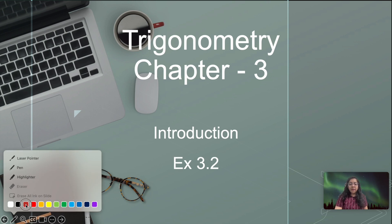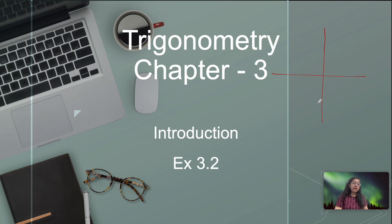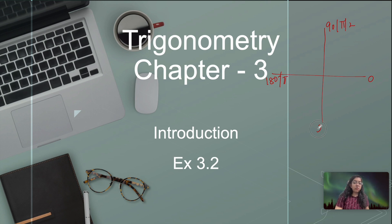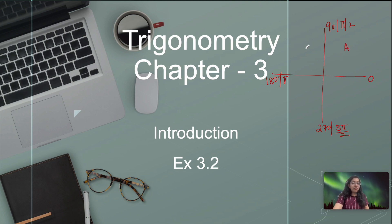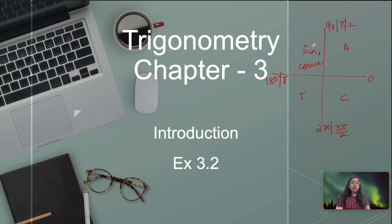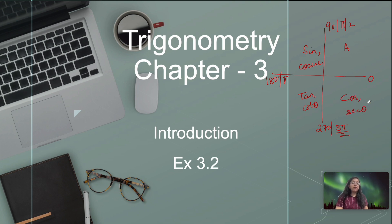First of all, if I have a right angle triangle: I have 0° here, 90° (or π/2) here, 180° (or π) here, and 270° (or 3π/2) here. Always remember the trick 'After School To College': All are positive in the first quadrant, sine and cosecant are positive in the second quadrant, tan and cot are positive in the third quadrant, and cos and sec are positive in the fourth quadrant.